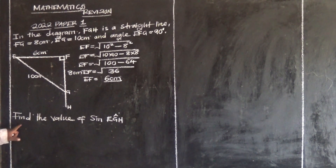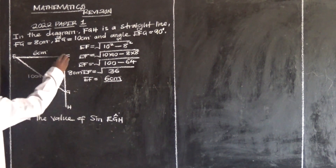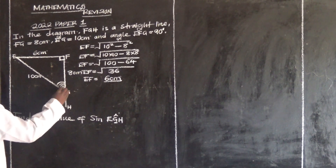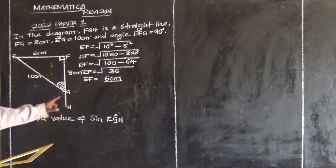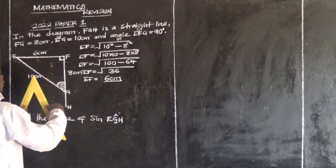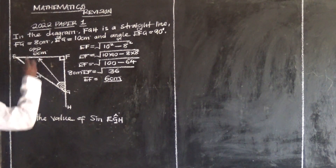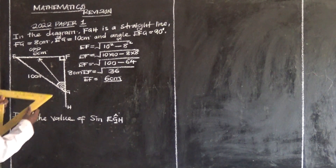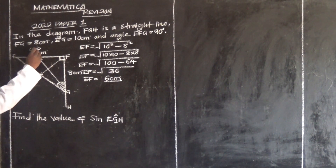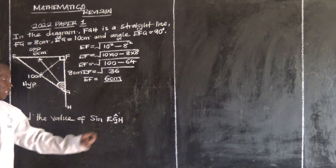Now we're going to find the value of sine EGF. So angle G is our reference angle. The side opposite to this reference angle becomes the opposite. And since this side is opposite to 90 degrees, it is the hypotenuse. So this is our hypotenuse and this is our opposite — the side opposite to the reference angle — because we are focusing on angle EGH.